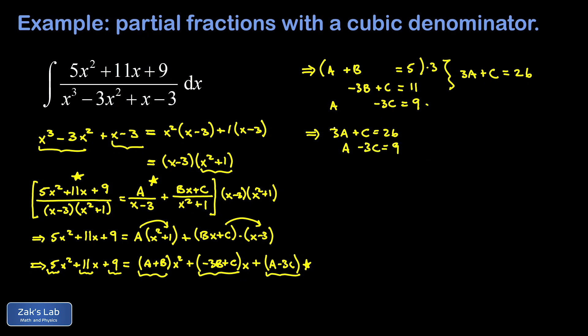Using elimination again, I multiply 3A plus C equals 26 by 3 and add to A minus 3C equals 9. That gives 9A plus A equals 10A, the C terms cancel (3C minus 3C equals 0), and the right side is 3 times 26 plus 9 equals 87. So 10A equals 87, meaning A equals 87 over 10.